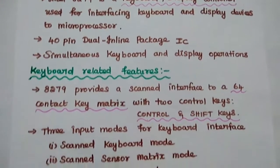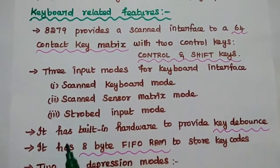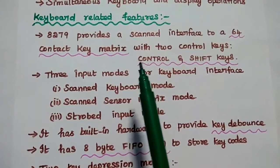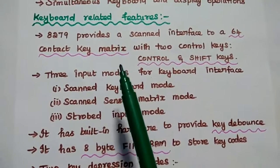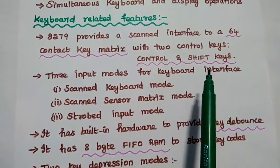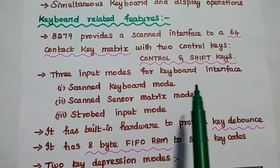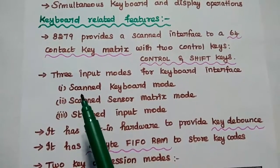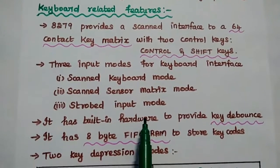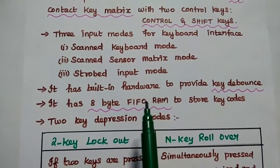Next are the keyboard-related features. 8279 provides a scanned interface to a 64-contact key matrix, with two additional control keys: Control and Shift. There are three input modes for this keyboard interface: the first is scanned keyboard mode, the second is scanned sensor matrix mode, and the third is strobed input mode. These three modes will be discussed in the architecture of 8279.